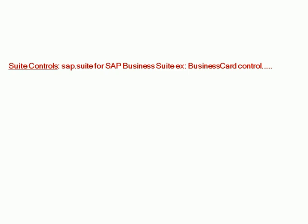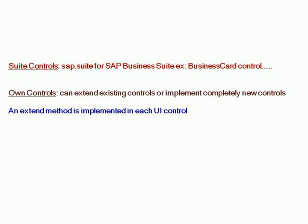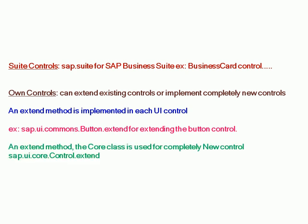Suit controls: sap.suit is for SAP Business Suite, for example business code control. For own controls, you can extend existing controls or implement completely new controls. An extend method is implemented in each UI control — for example, sap.ui.commons.button.extend for extending the button control. For completely new controls, the core class sap.ui.core.control.extend is used.